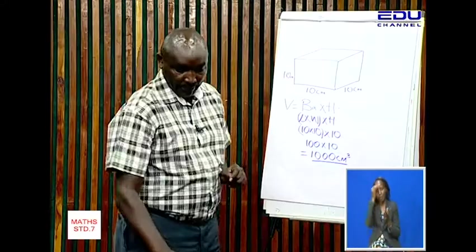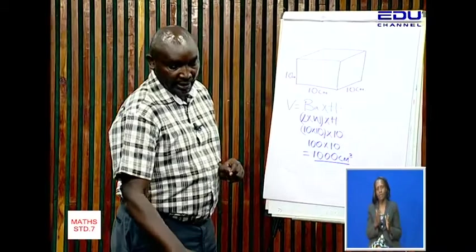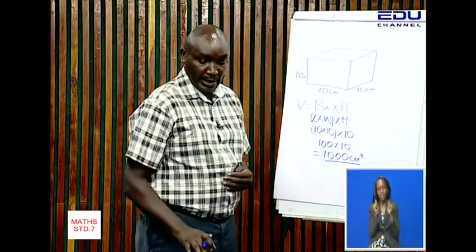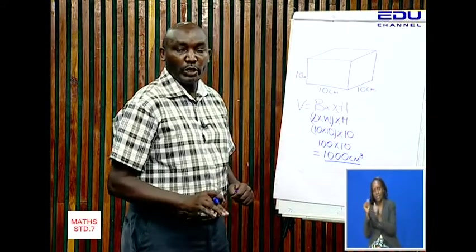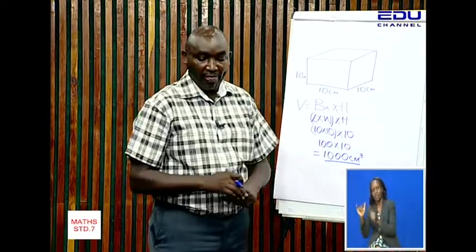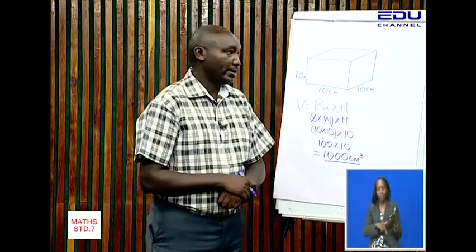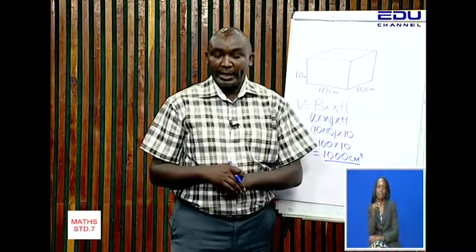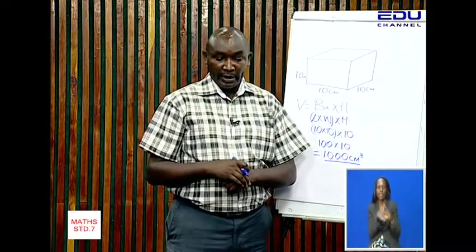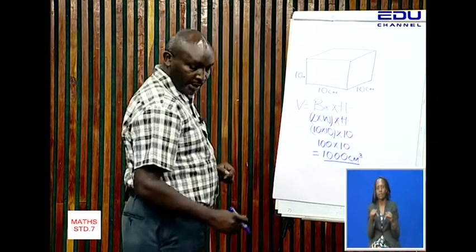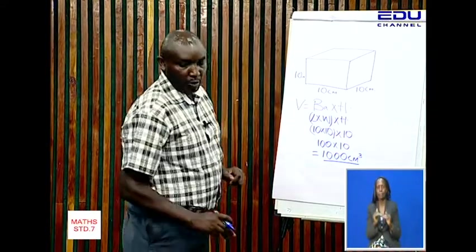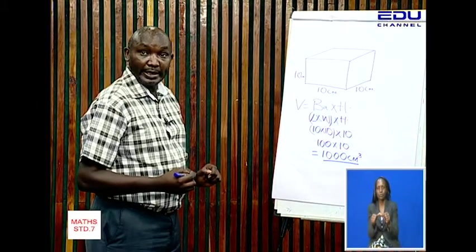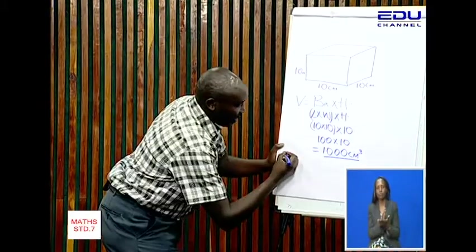I want you to see that when you multiply 10 by 10 by 10 you are going to get 1000 cubic centimeters. This is what is going to guide us in our lesson. Now, if we proceed on, we shall see that indeed 1000 cubic centimeters...